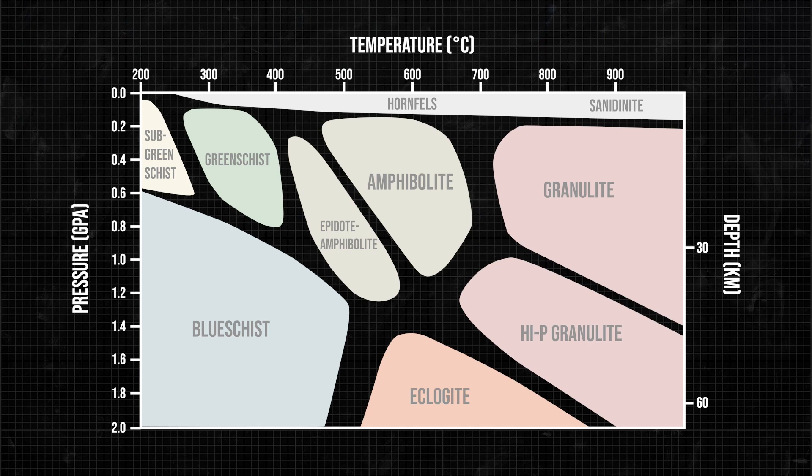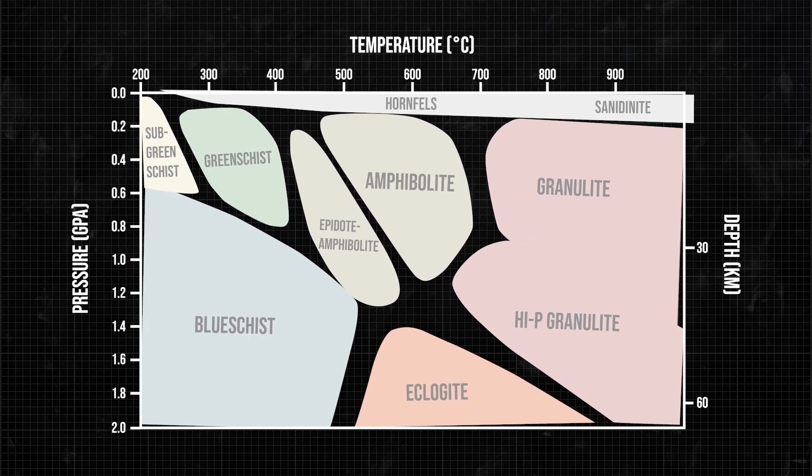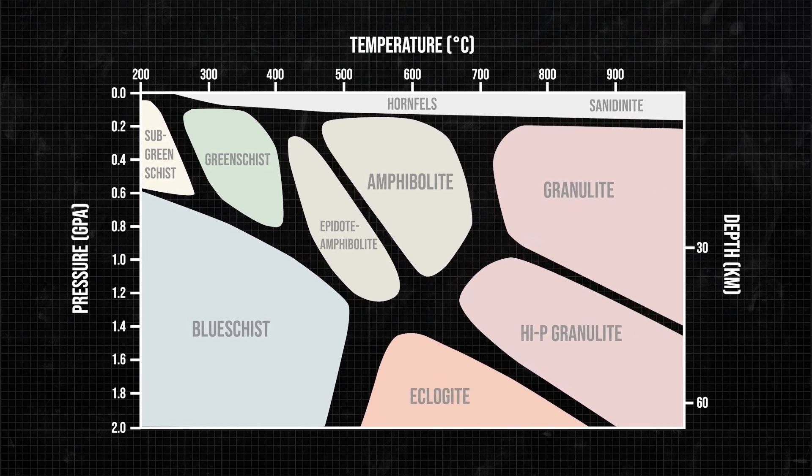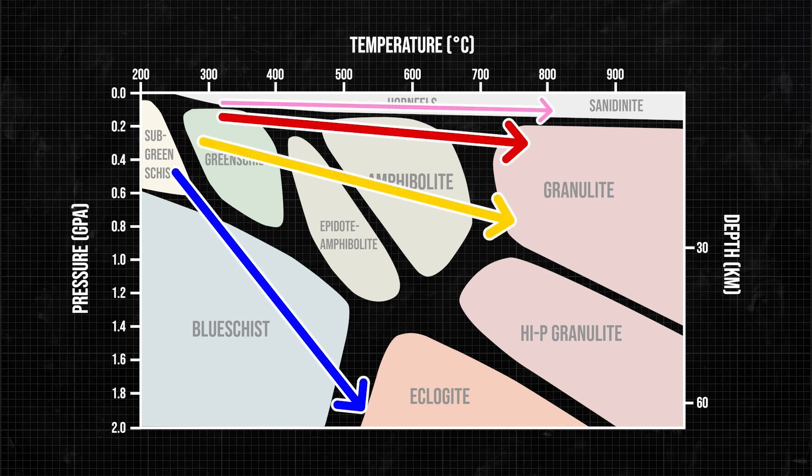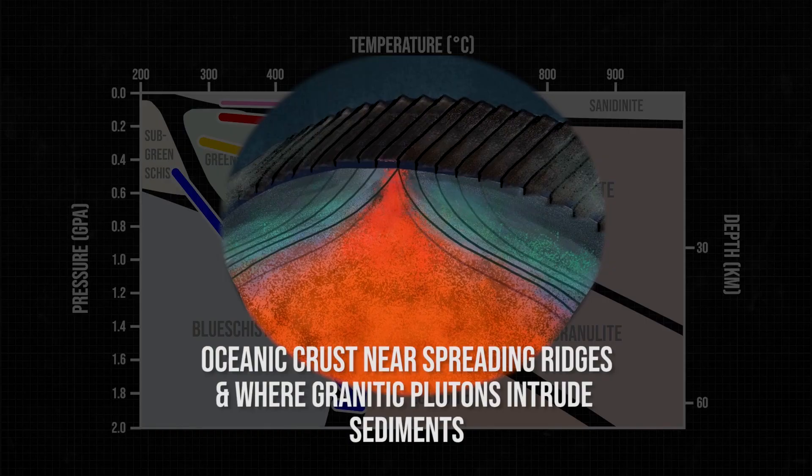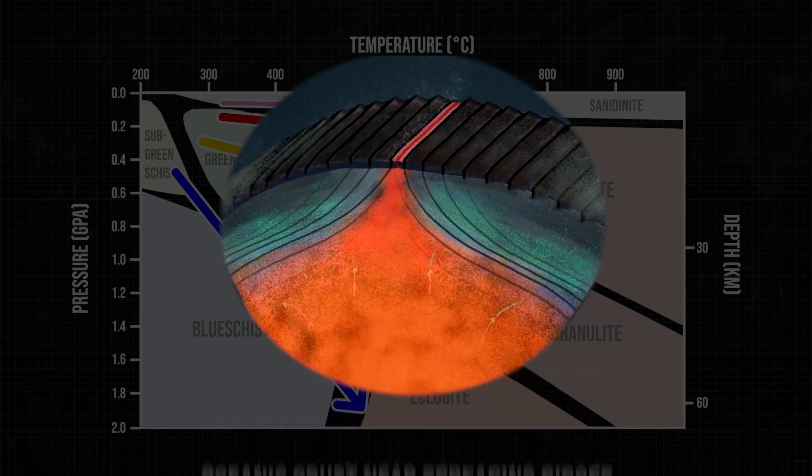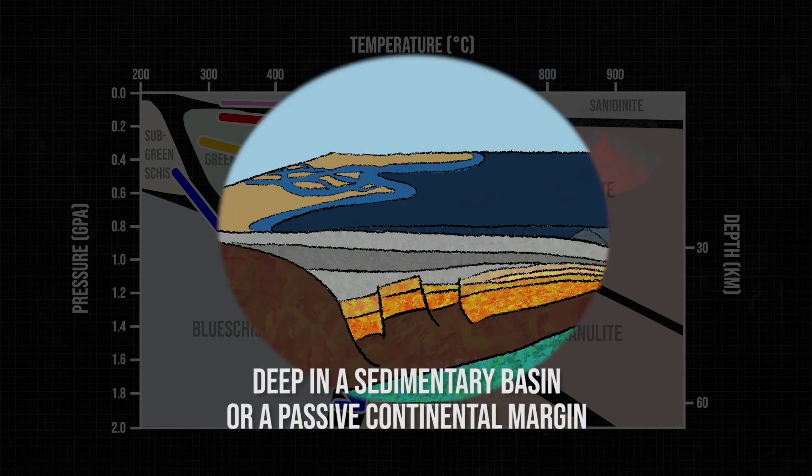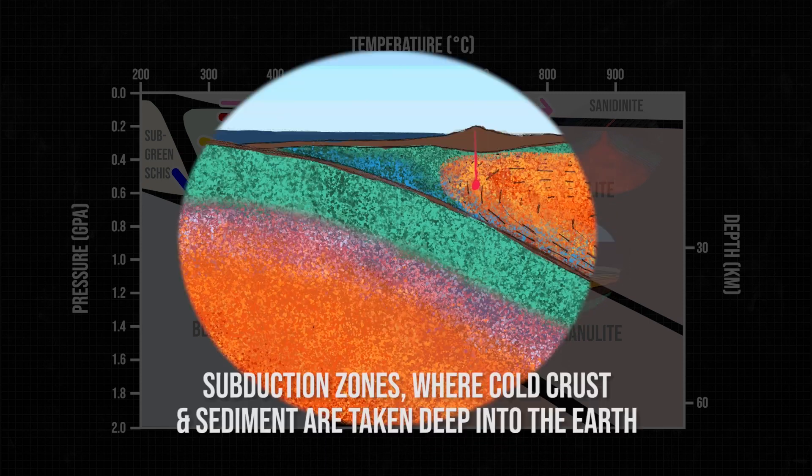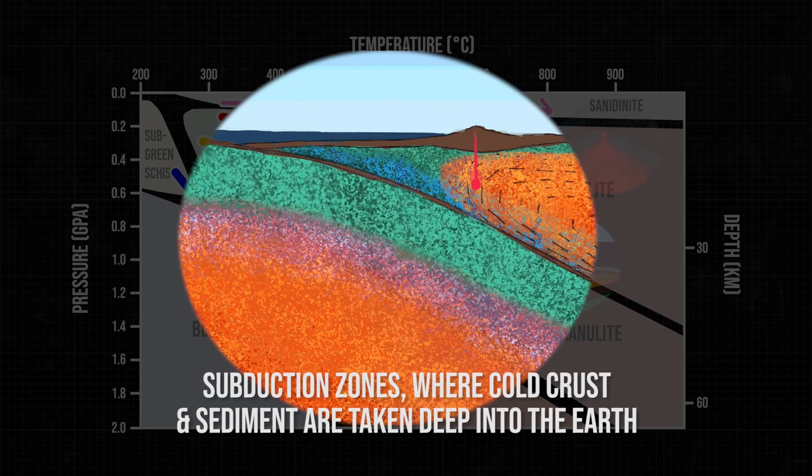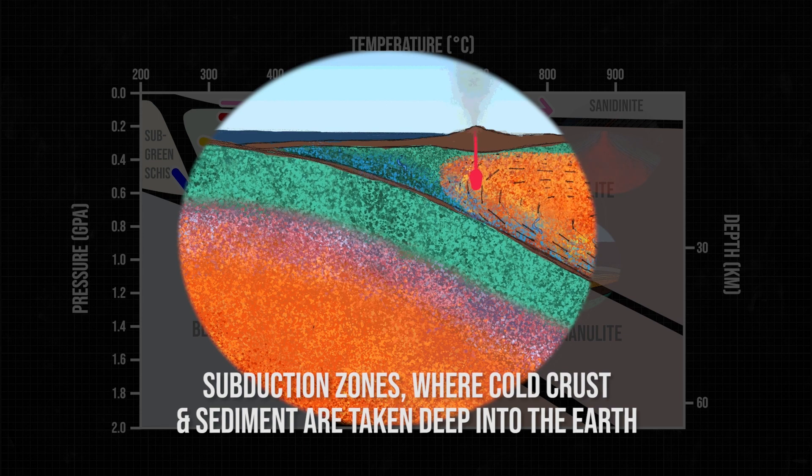Scientists characterize these geokitchens by the temperature and depth domain that they occupy in the earth. There are three main types of plate tectonic kitchens where rocks are cooked: hot ones where magma dominates, normal ones with thick sediments, and cold ones where metamorphism is controlled by pressure.